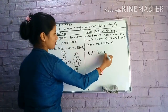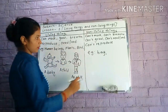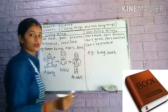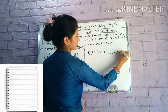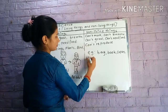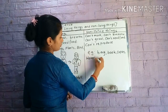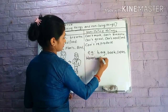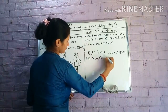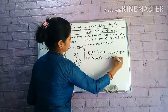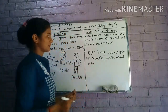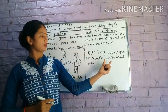In this way, I will write more examples of non-living things. Number one: bag. Number two: book. Your copies. And your water bottle also. And this whiteboard also — these are non-living things. These are the examples of non-living things.